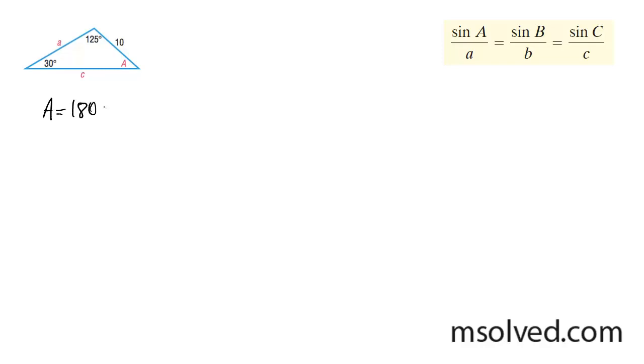I'm just going to do 180 minus 125 minus 30, and that is going to get me 25 degrees for A.